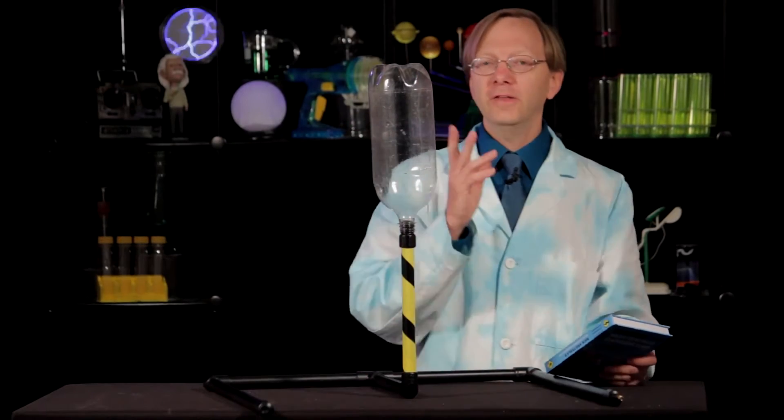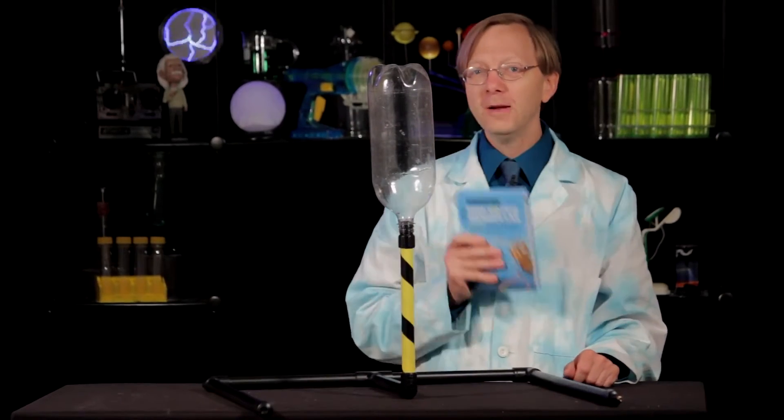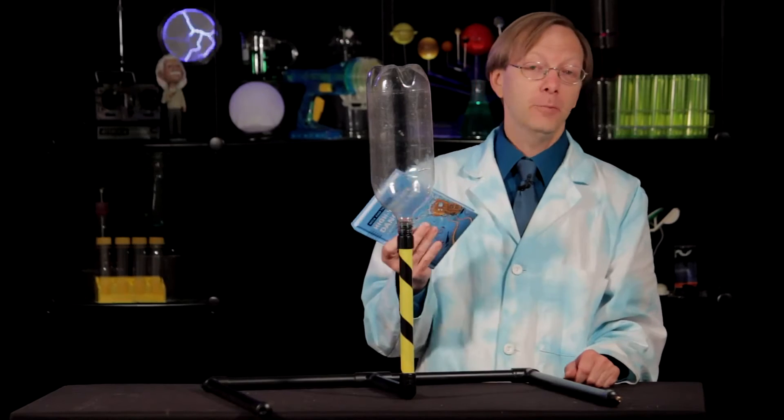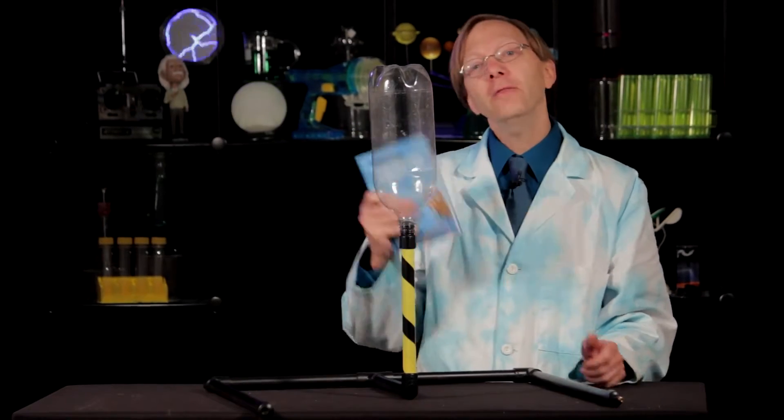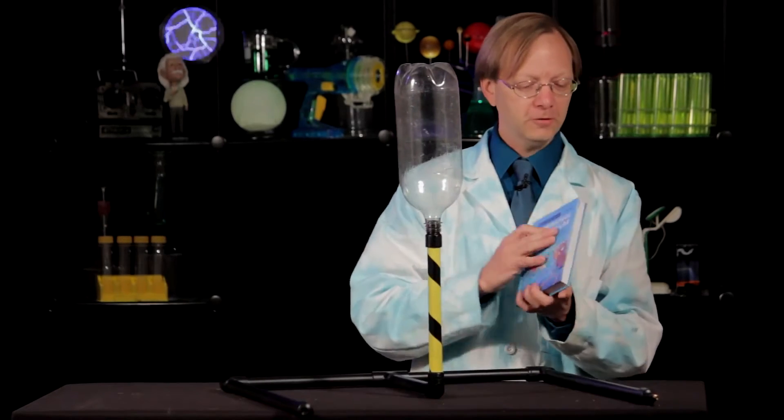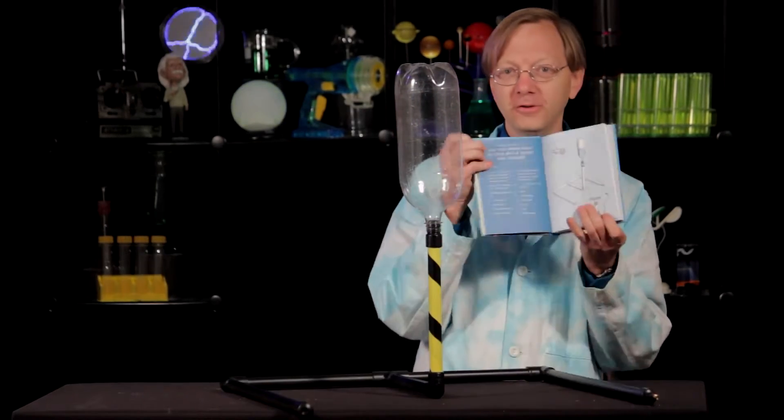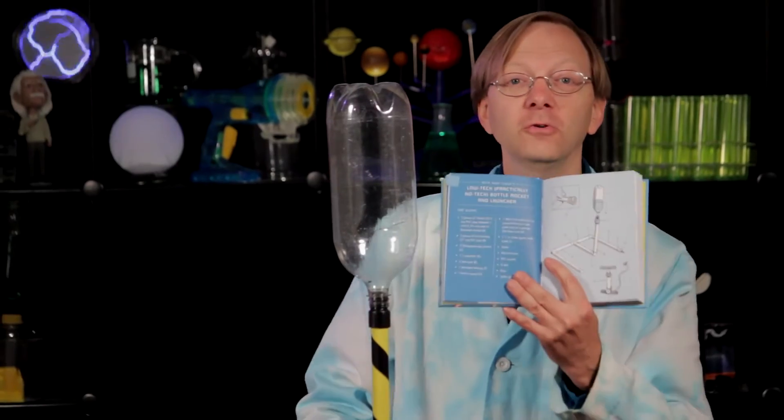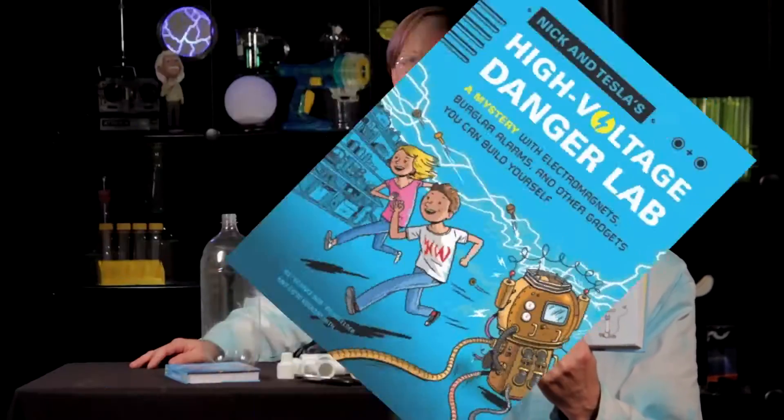All right Nick and Tesla fans, thanks for tuning in. So in chapter one, Nick and Tesla get a little bored, so what do they do? Well, they build a water-powered bottle rocket just like this one. Now the instructions start on page 36. I'll show you how it all goes together so that you can try it yourself.